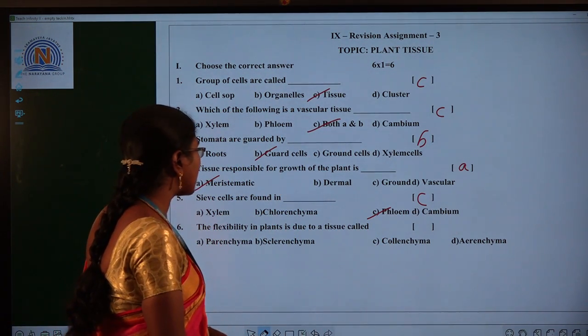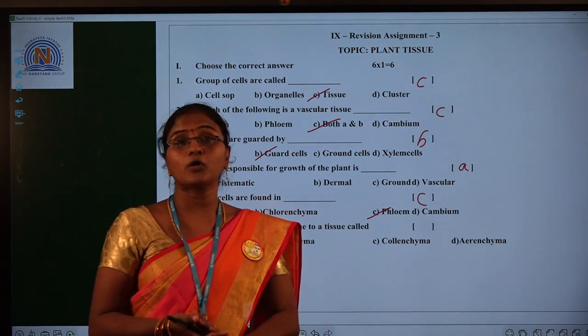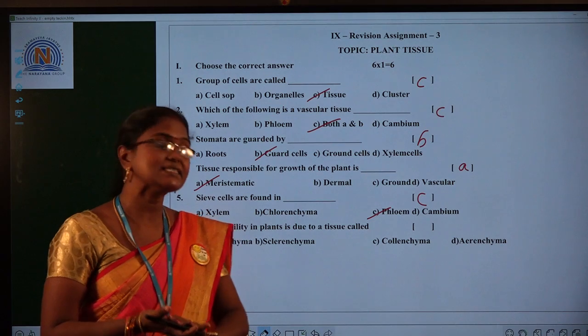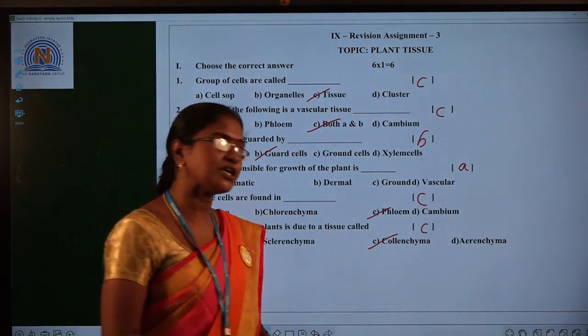And the flexibility in plants is due to a tissue called? So the flexibility and mechanical support of the plant, it is given by the collenchyma. Option C. Okay. Let us see the question and answers.